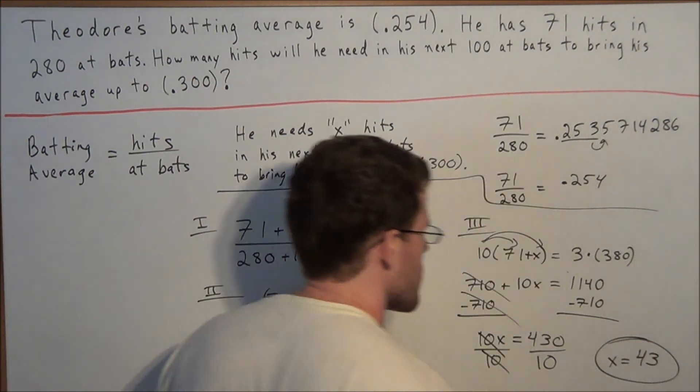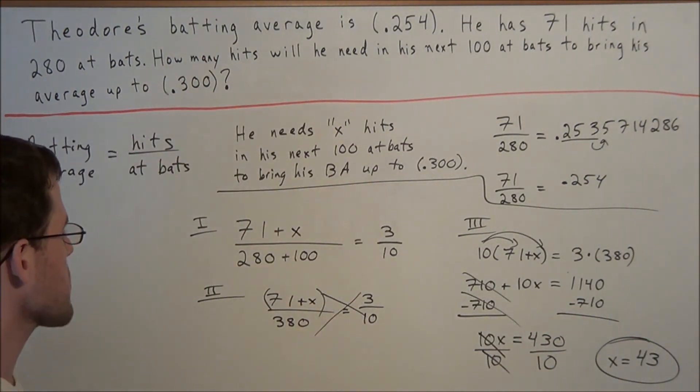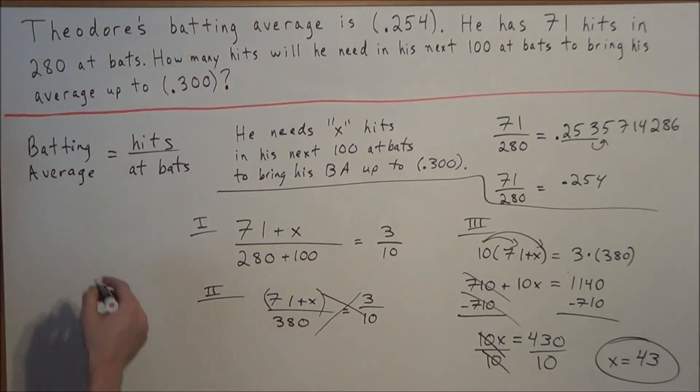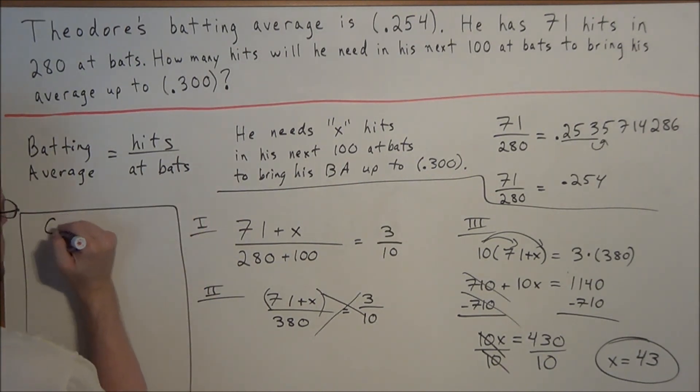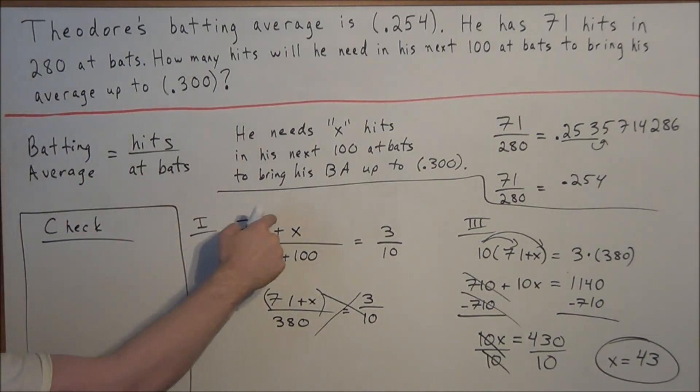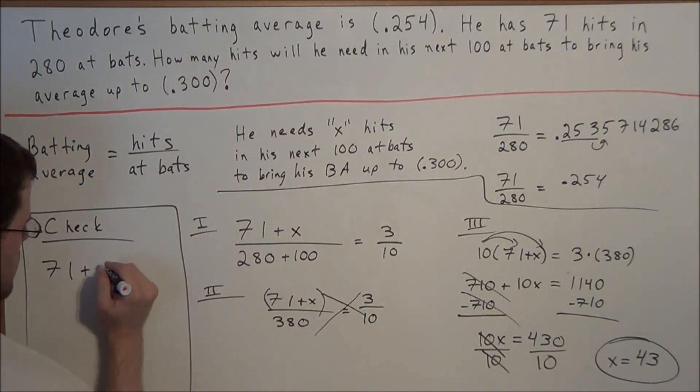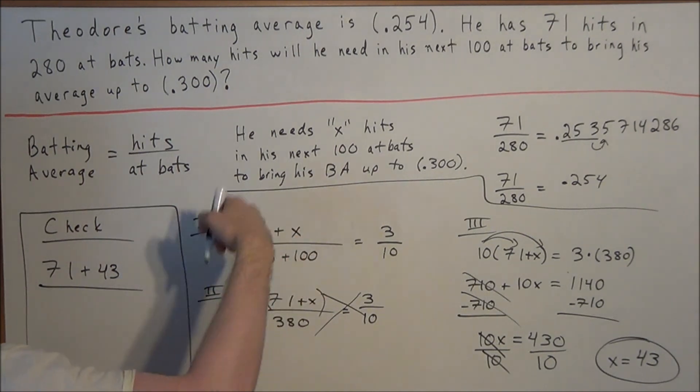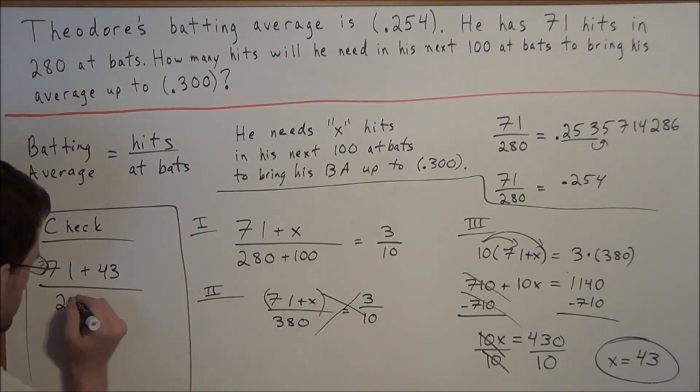So this tells us that Theodore is going to need 43 more hits to bring his average up to 300. Well, let's just check to see if that's in fact true. So we always want to check our answers. So to check our answer, remember he had 71 hits. So now we're saying that he needs another 43 hits. And now his next 100 at-bats brought him from 280 to 380.